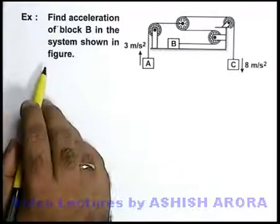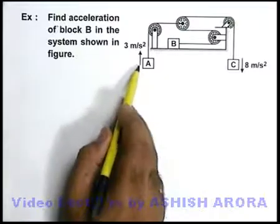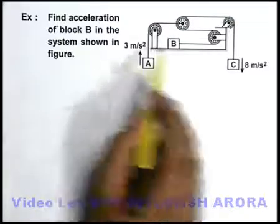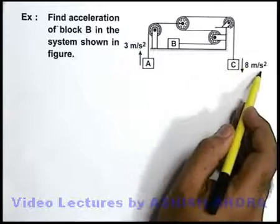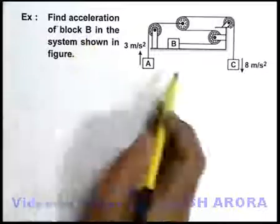Let's take up another example. Here in the system shown, we are given that block A is going up at 3 meters per second squared, C is coming down at 8 meters per second squared, and we are required to find the acceleration of block B in the system shown.